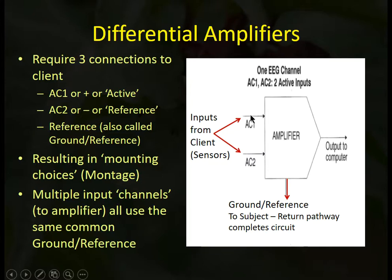Here we have the input from a scalp sensor and an input from an ear reference. A ground reference is connected to some other location, possibly the other ear. We compare these two inputs, each individually compared to the ground reference, and then compare those two inputs to each other. The output of the amplifier is a single output representing the difference between the two inputs.